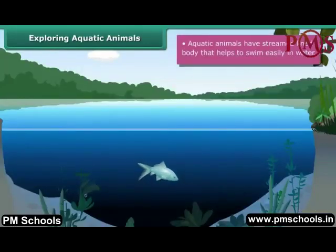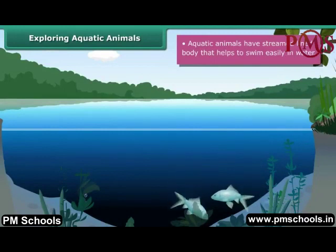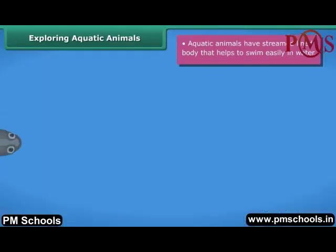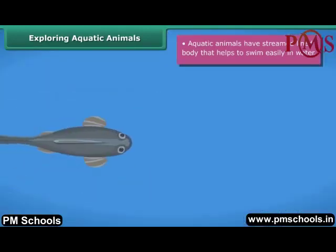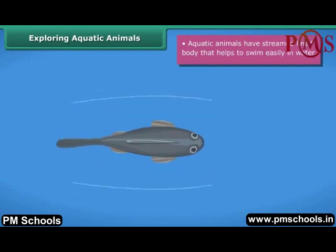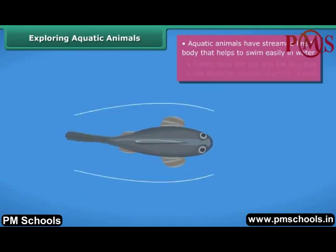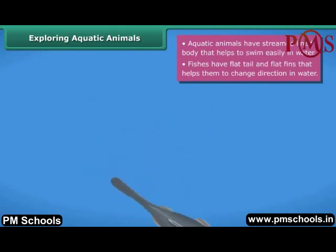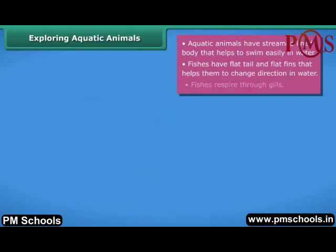Aquatic animals have special features and adaptations that help them to survive and live in aquatic habitats. Aquatic animals like fishes have a streamlined body that helps them to swim easily in water. Fishes have a flat tail and flat fins that help them to change direction in water. Fishes respire through gills.